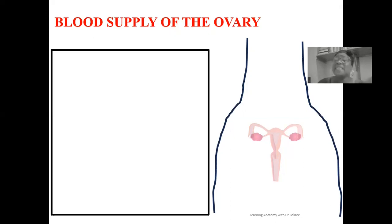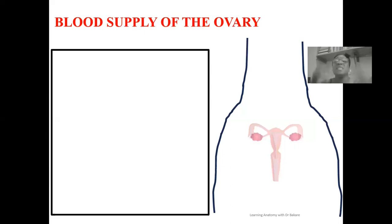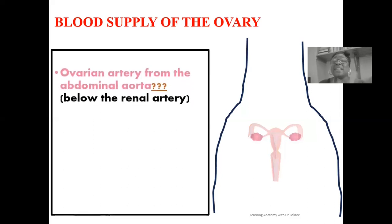Justifying why the ovarian artery emerges from the abdominal aorta is based on its embryonic development. During development, the ovary develops around the abdominal space, which would then descend down into the pelvic cavity where it would finally be located. As it moves from the abdominal space down to the pelvic cavity, it tends to drag the vessel down along with it. This is why the blood supply of the ovary, located within the pelvic cavity, emerges from the abdominal aorta.